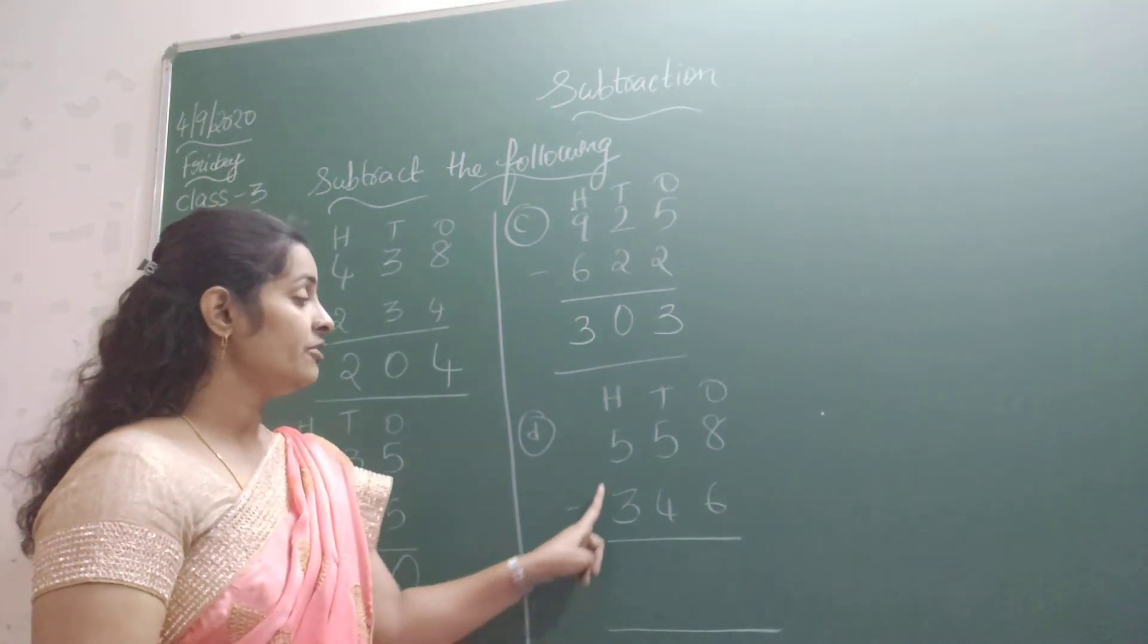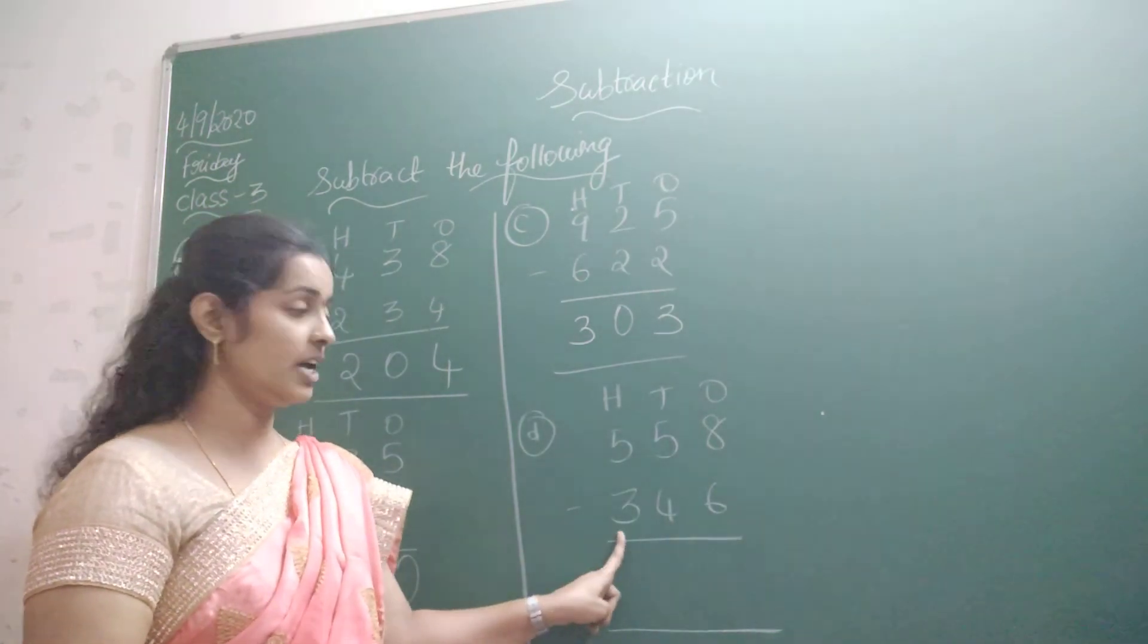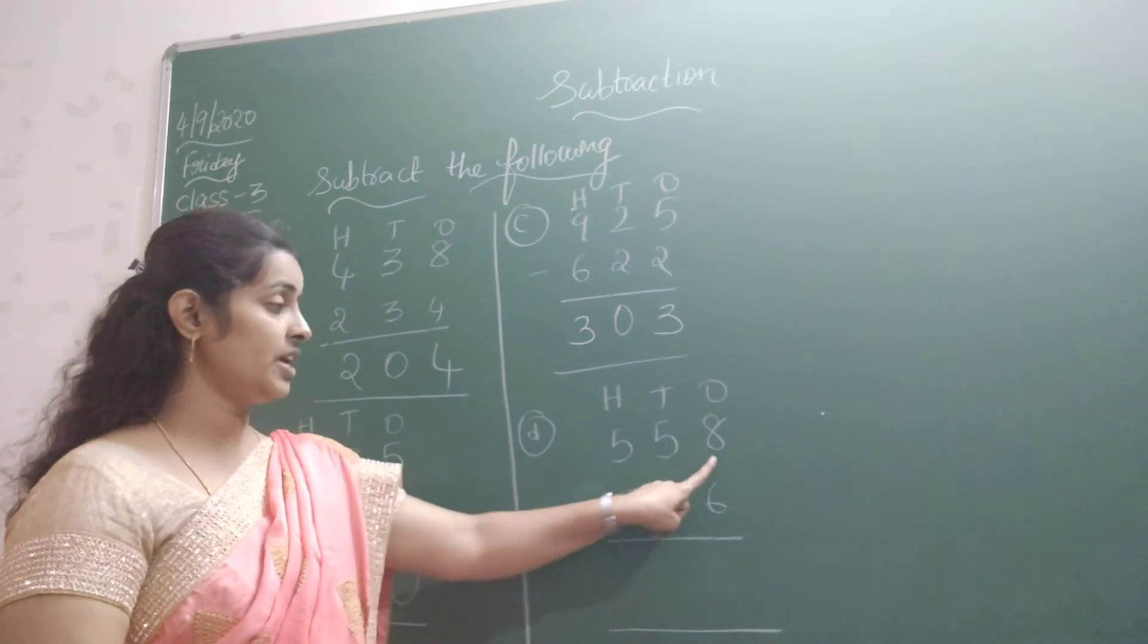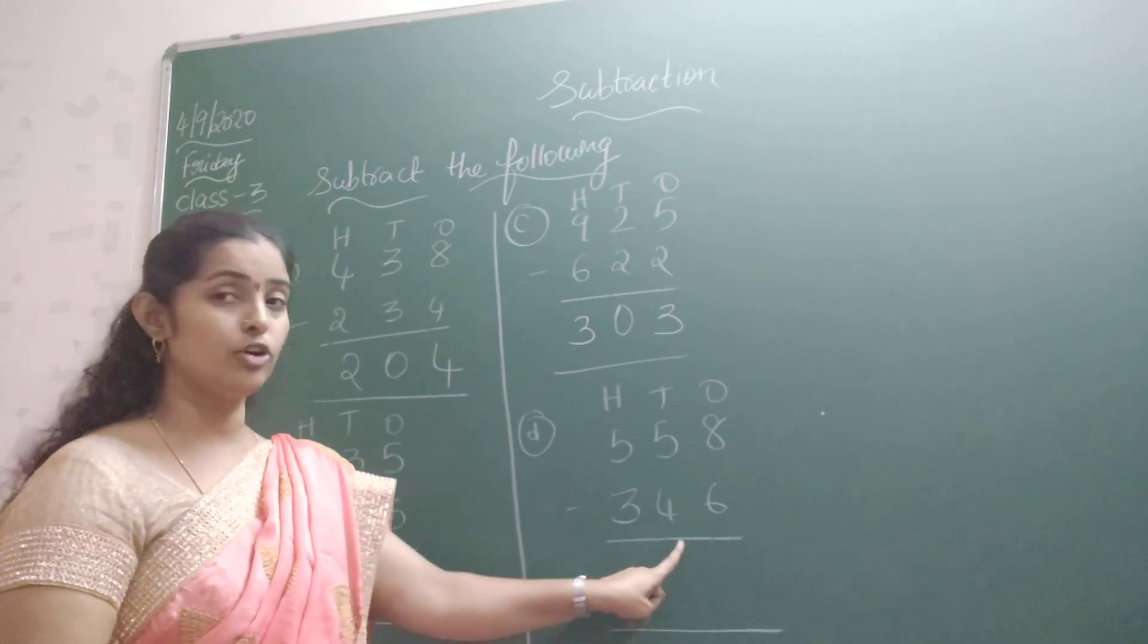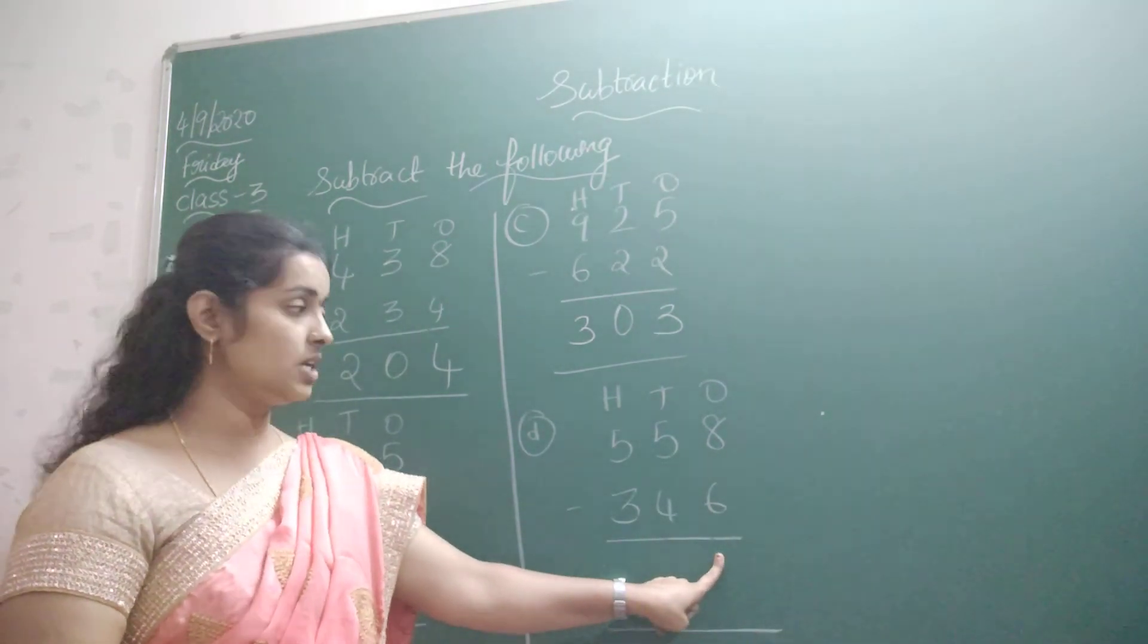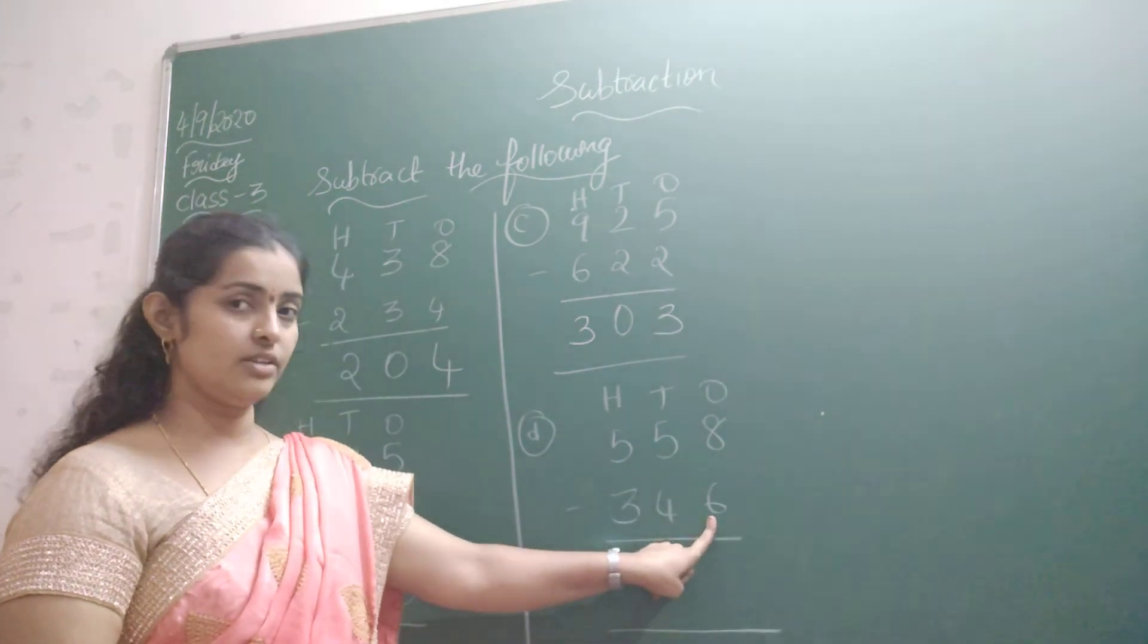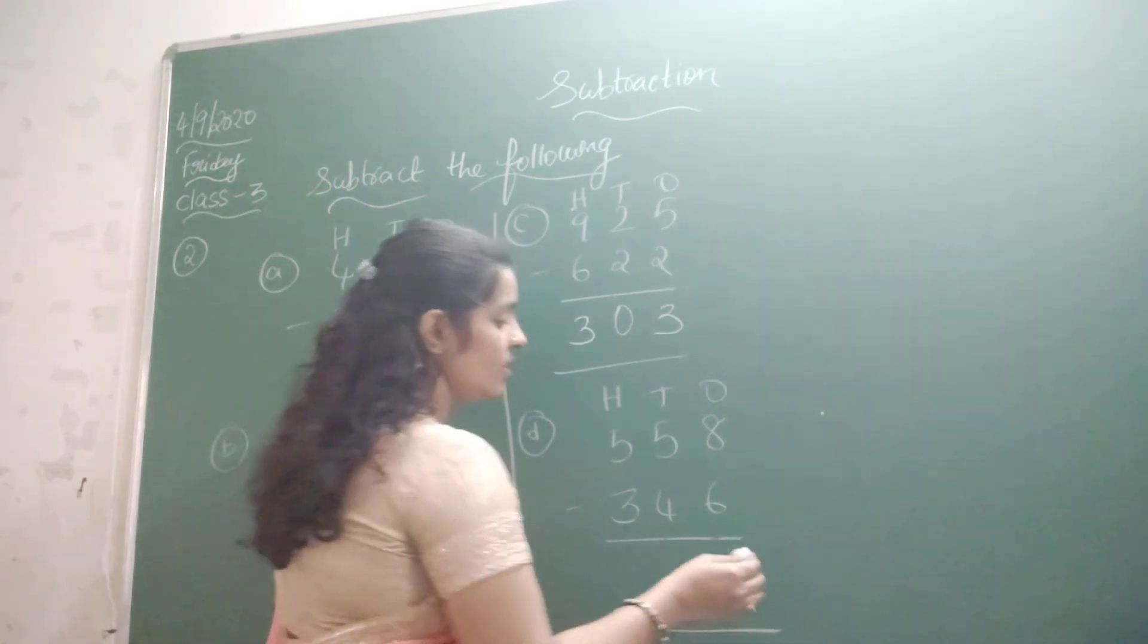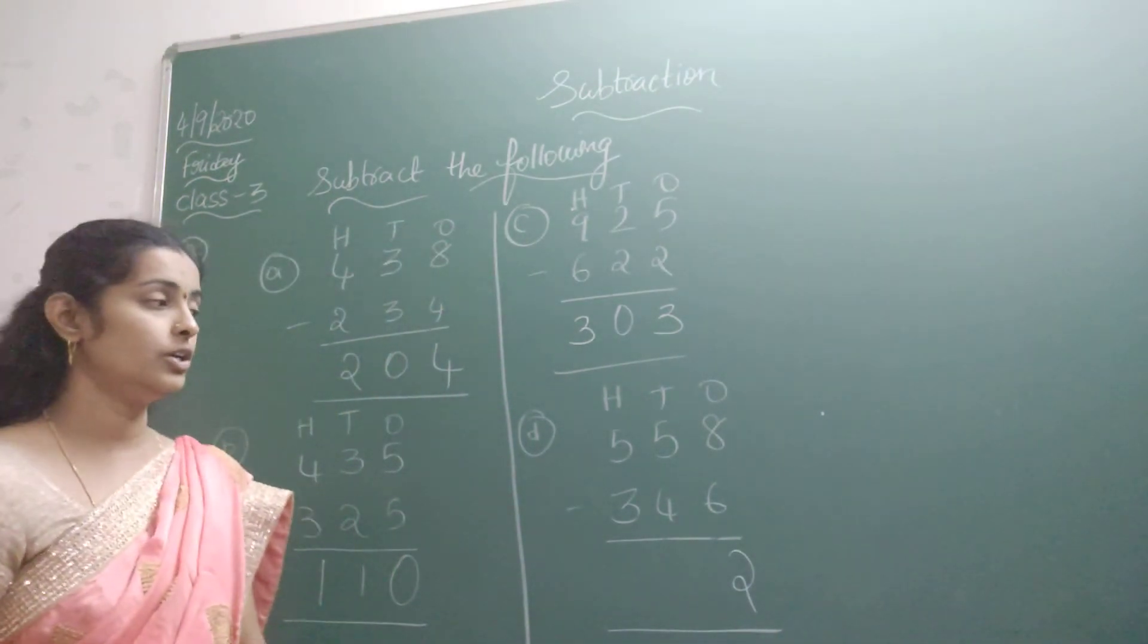Problem D. 558 minus 346. So what do I get here? 8 minus 6 is how much? 2. 8 minus 6 is 2.